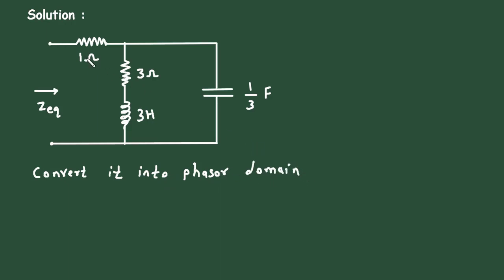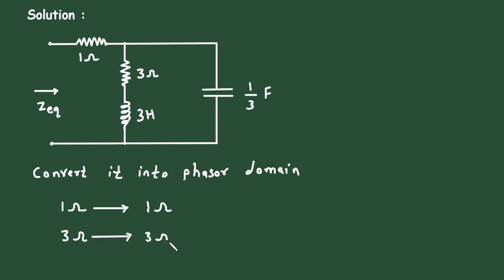Here, this 1 ohm resistance will remain the same. This 3 ohm resistance will also remain the same in both time domain and frequency domain. But this 3 Henry inductance will change to j omega L.